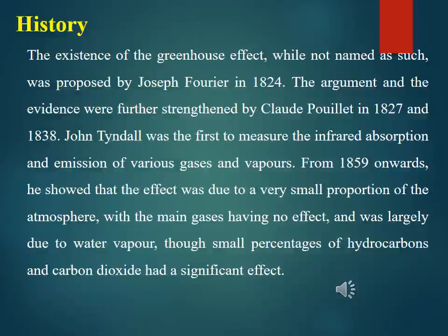The existence of the greenhouse effect, while not named as such, was proposed by Joseph Fourier in 1824. The argument and evidence were further strengthened by Claude Pouillet in 1827 and 1838. John Tyndall was the first to measure the infrared absorption and emission of various gases and vapours. From 1859 onward, he showed that the effect was due to a very small proportion of the atmosphere, and was largely due to water vapour, though small percentages of hydrocarbons and carbon dioxide had a significant effect.